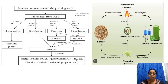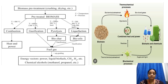Next comes the thermochemical process — biomass pre-treatment involving crushing and drying. Pre-treated biomass undergoes combustion, gasification, pyrolysis, and liquefaction. From pyrolysis, biochar and bio-oils are obtained and used as fuel gas along with some upgrading elements.